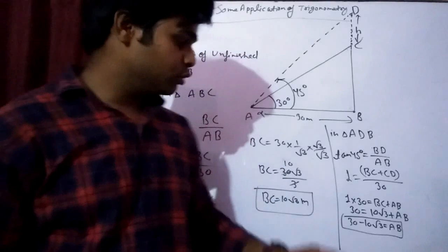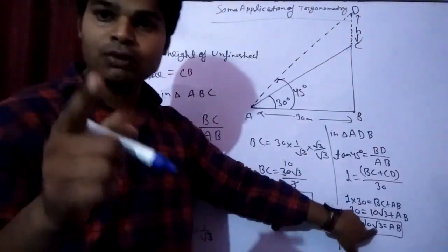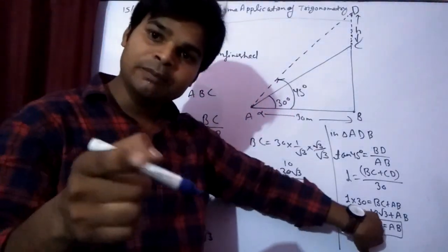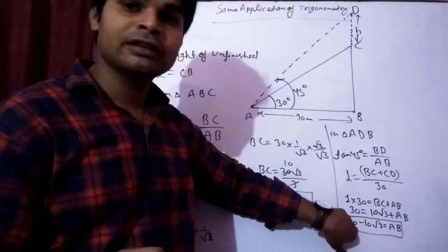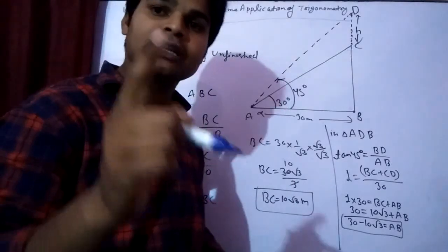Now put the value of root 3 equals 1.732. Multiply by 10 and subtract from 30. Then you get the final answer. Okay.